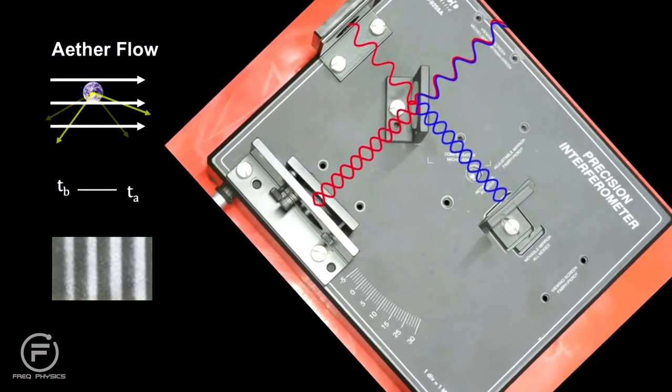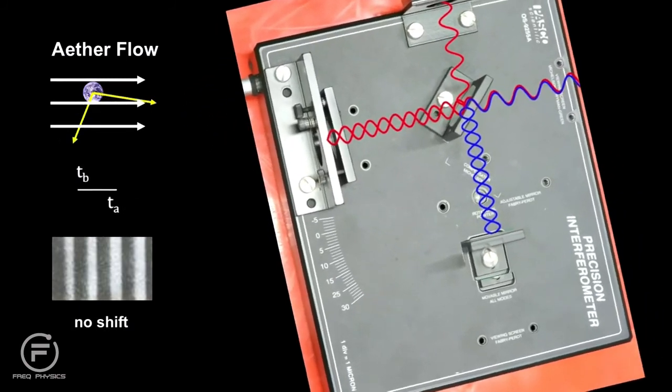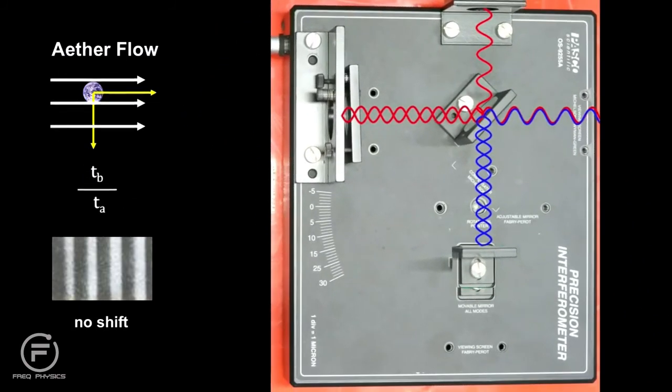But there was no shift. When the experiment was performed at different seasons and at different locations, the results were the same. No shift. Initially, the fact that there was no shift was viewed as a failure by Michelson and Morley to measure the velocity of the ether. But on reflection, scientists started asking some very fundamental questions.